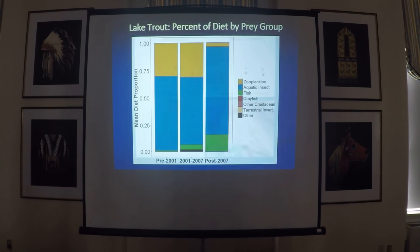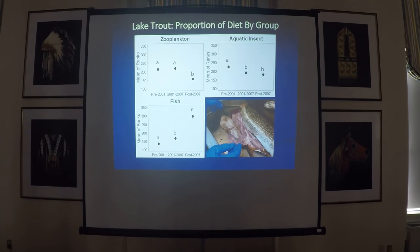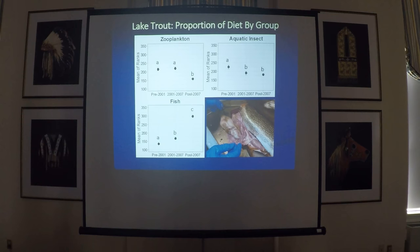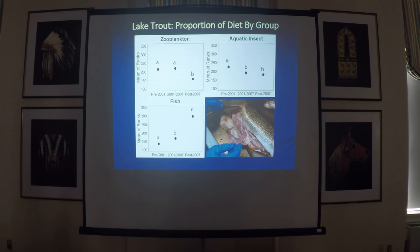Looking at the analysis of the rank data, we see that the drop in zooplankton was significant post-2007. We also had a significant decline in aquatic insects after the removal began, and we had a significant and continued increase in the proportion of fish in the diets of lake trout after removal.